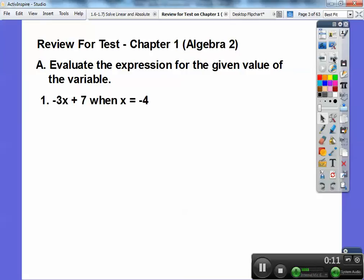Evaluate the expression for the given value of the variable. Here, -3x + 7 when x equals -4. So you're just going to plug in -4 right there for x. So it's going to be -3 times -4, which becomes a positive 12, and 12 + 7 is 19.